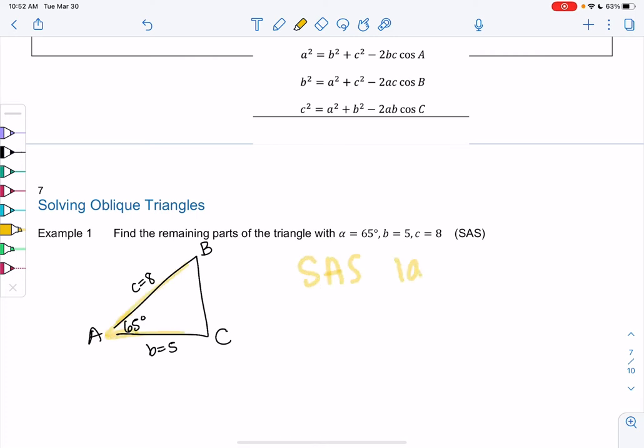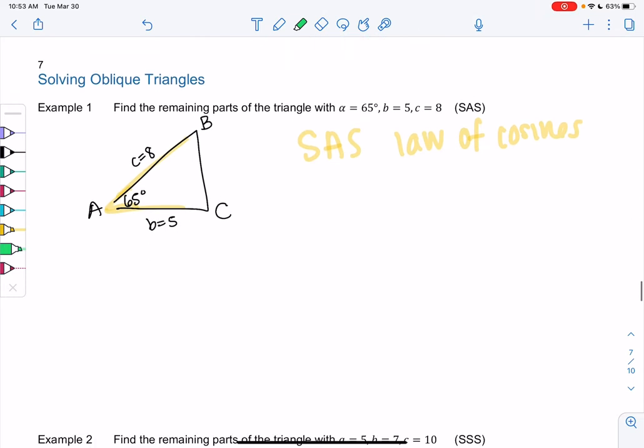And this would be a side-angle-side. So this will be law of cosines. In this case, I'm going to use the first version because we know b, we know c, and then we know angle A.